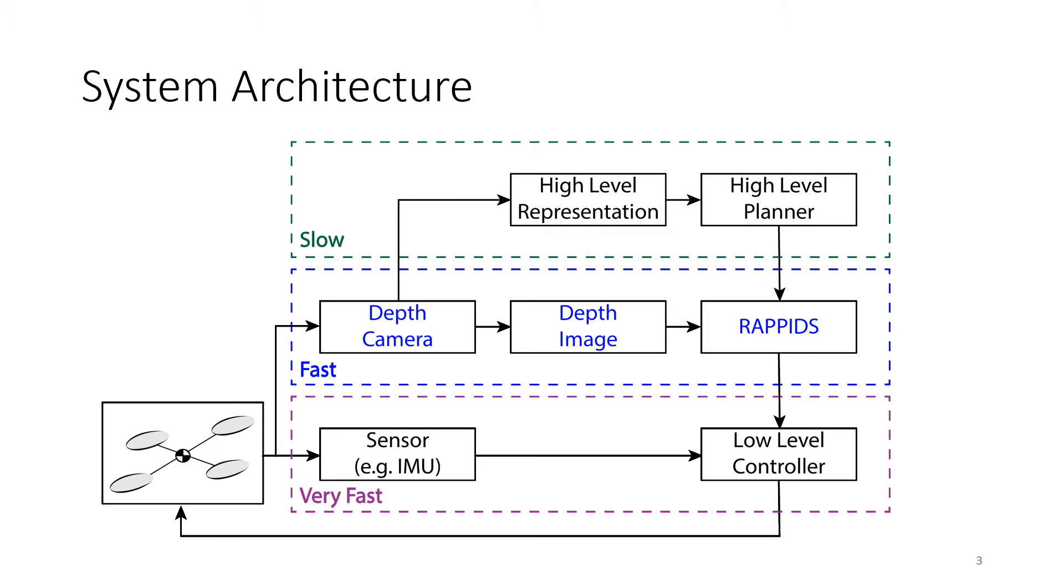In this work, we're going to focus just on this middle layer. Specifically, we're only considering vehicles that have an onboard depth camera and we're going to use a single depth image in order to plan trajectories in a receding horizon fashion that avoid obstacles over the next few seconds. So the idea is that the higher-level planner will give us some high-level goal to work towards.